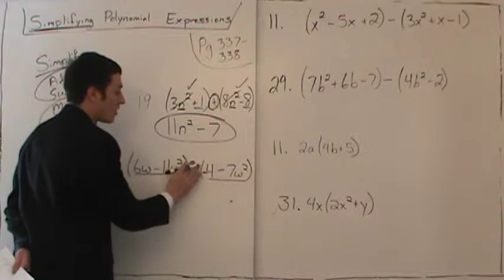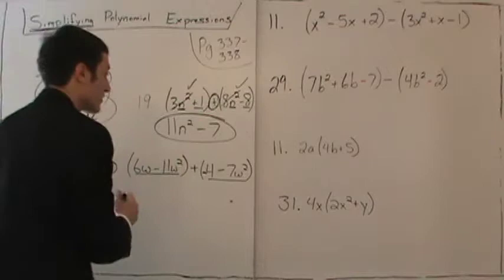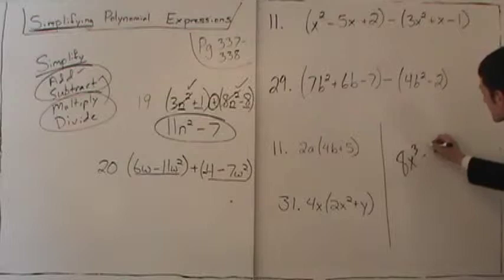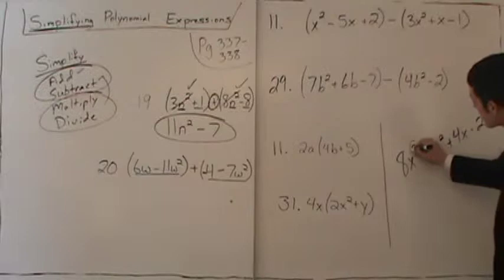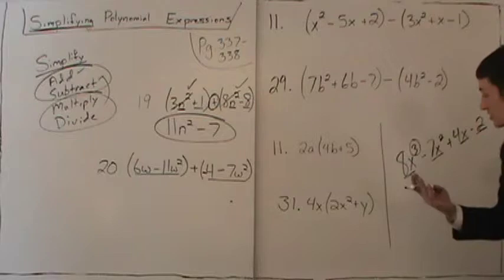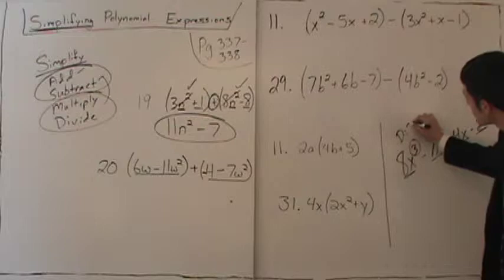Before we go further, let me talk about degree. If I write 8x cubed minus 7x squared plus 4x minus 2, degree is the exponent. So this first term is third degree, the next is second degree, then first degree. The degree of the constant term — x to the zero power — equals 1, so we don't write it. We say the constant term has degree zero. We like to line things up from largest degree to smallest degree.